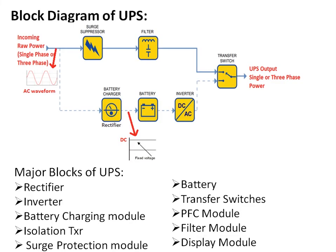This is the typical block diagram of a standby type of UPS. Whenever the incoming raw power is available, it is directly fed to the load through the surge suppressor and filter to the output. Simultaneously, this incoming power is used for charging the battery. Whenever the incoming raw power fails, the UPS detects this and the inverter starts supplying power to the output, taking DC energy from the battery, converting it to AC, and supplying it to the load.